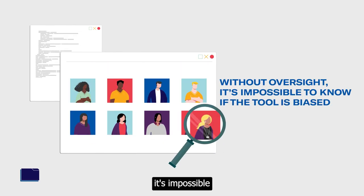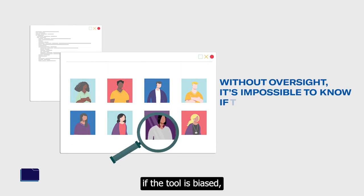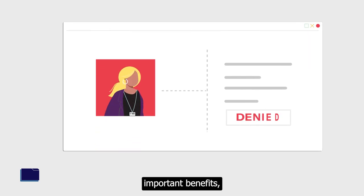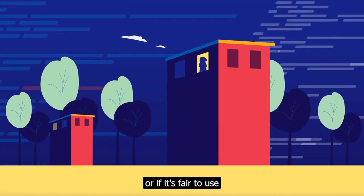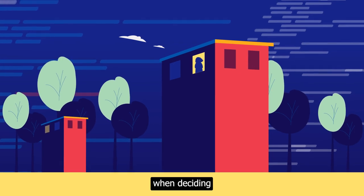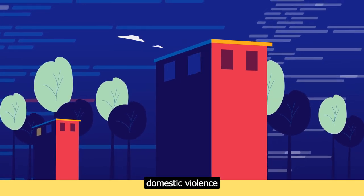Without oversight, it's impossible to know if the tool is biased, if it denies too many people important benefits, or if it's fair to use an algorithm at all when deciding who deserves support as a domestic violence survivor.